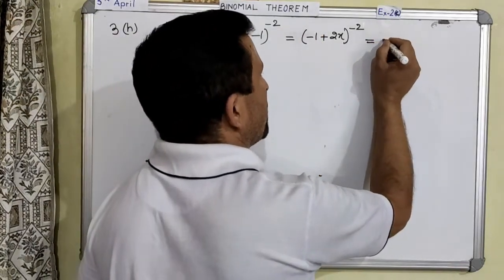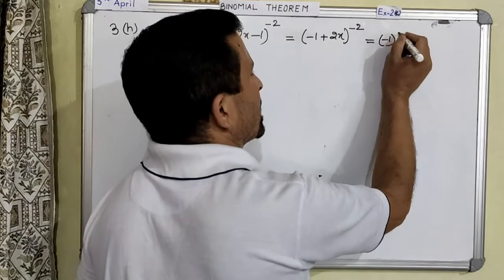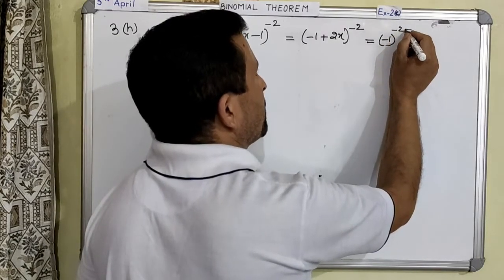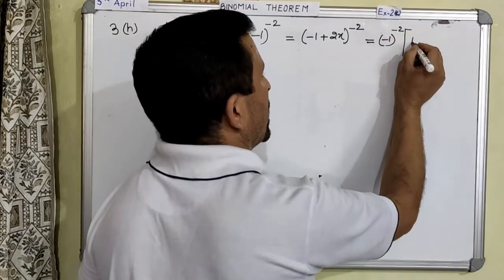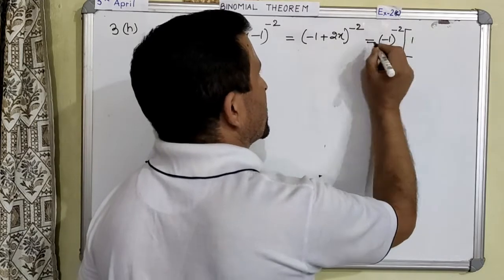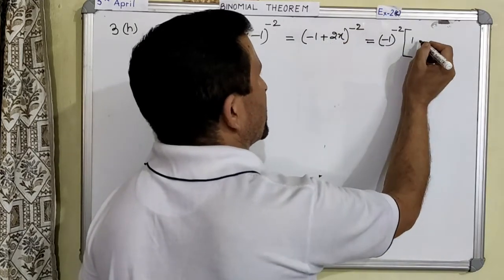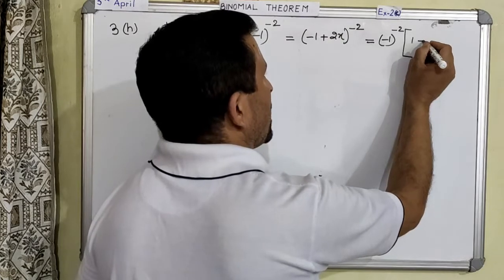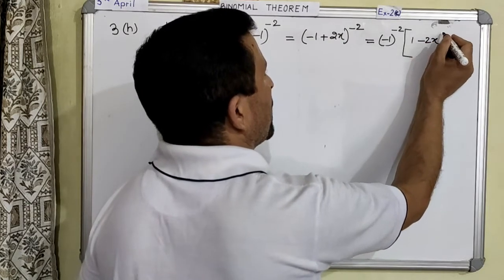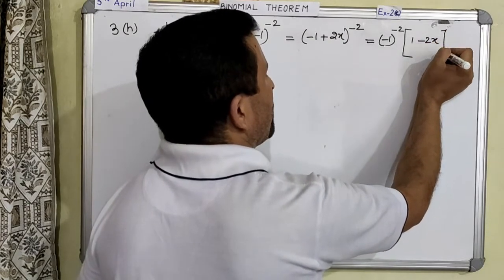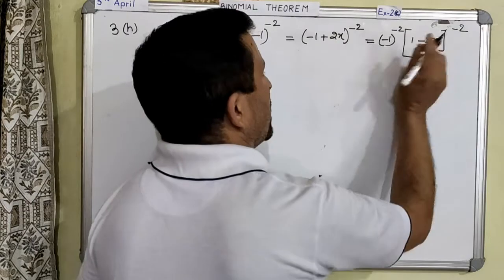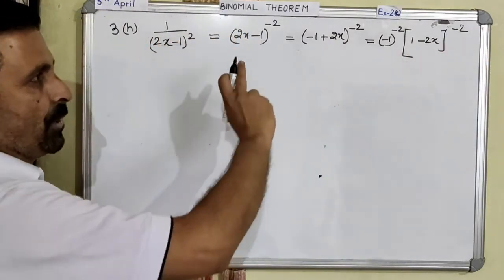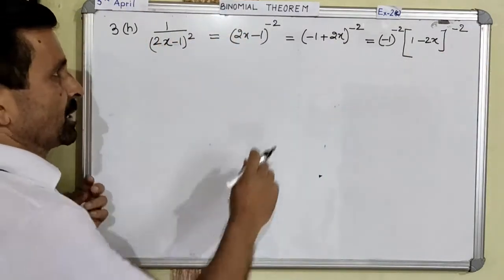So it will come out as minus 1, with the same power as the bracket — minus 2. And then the remaining we will write inside: so 1, and then this minus sign will go with this also because you have taken out the minus sign common. So this is minus 2x to the power negative 2. Now this is our question which is in the appropriate form and we can now use the binomial expansion.